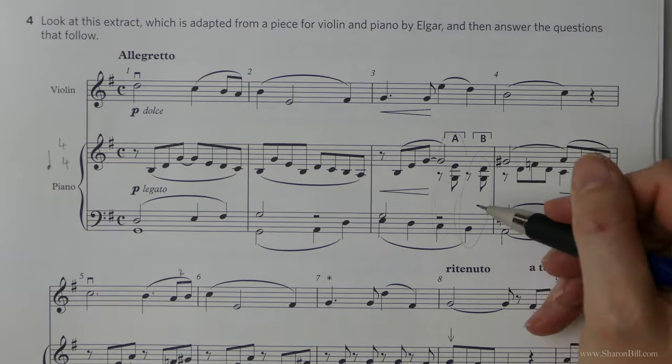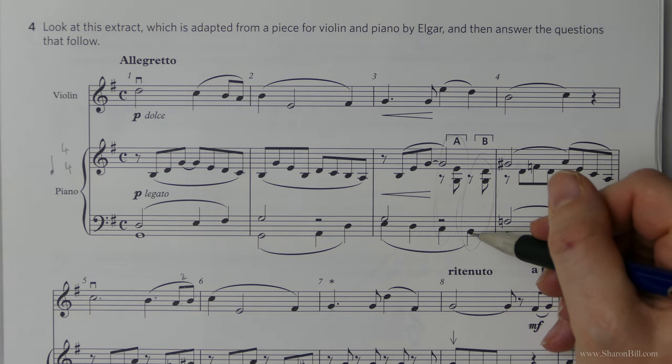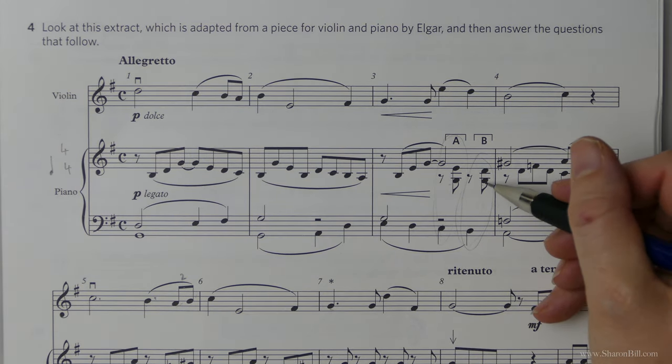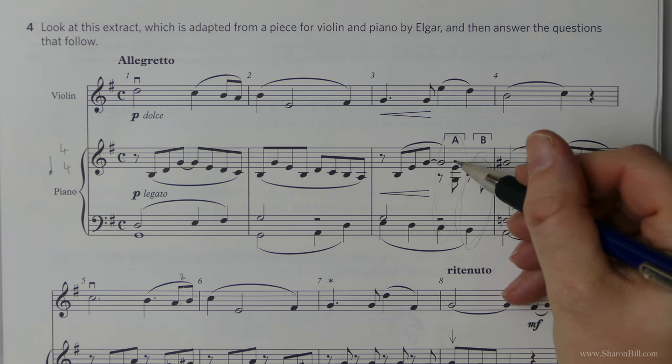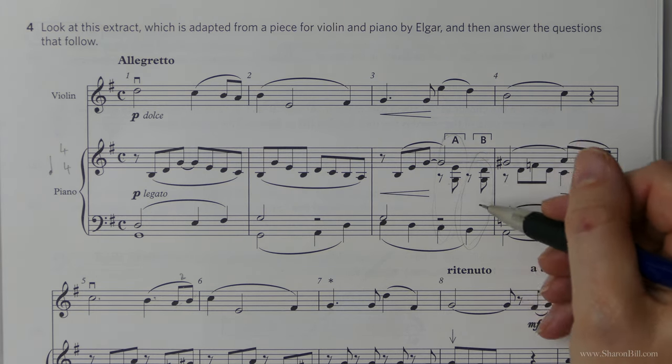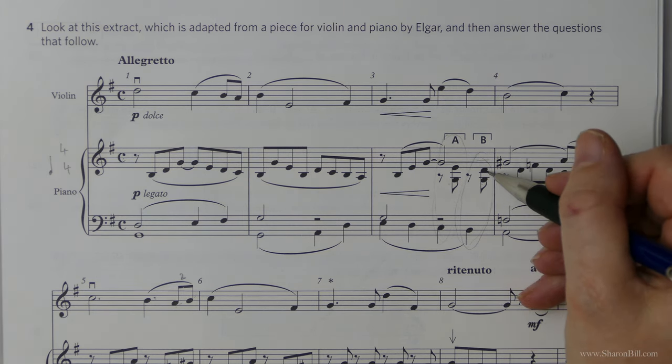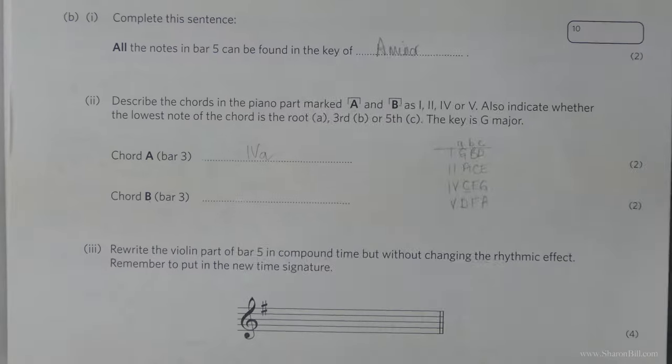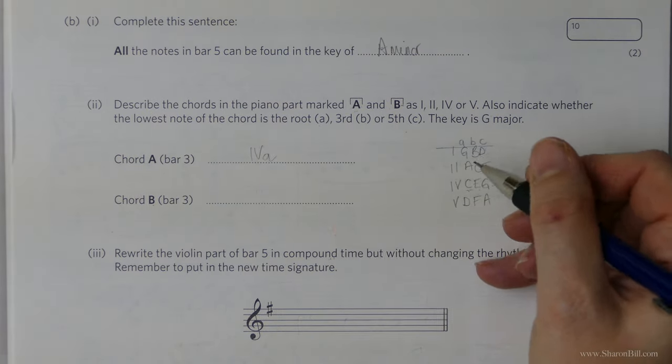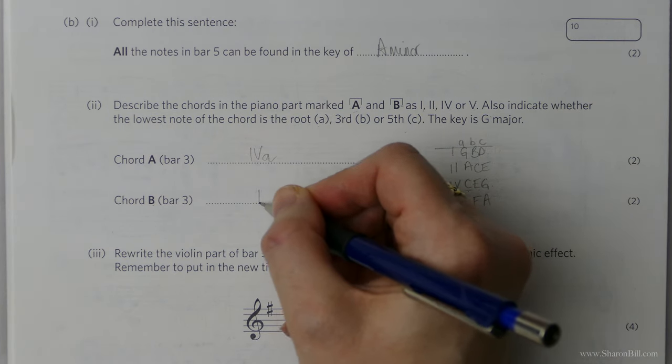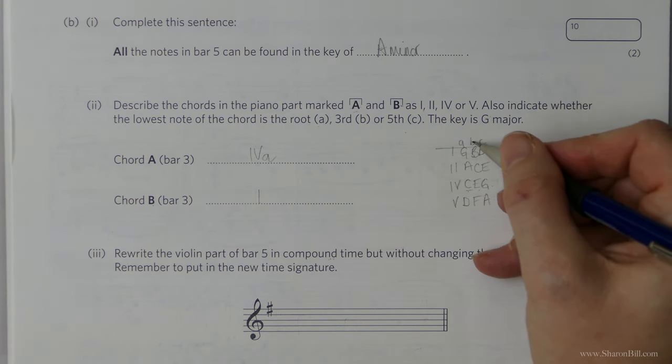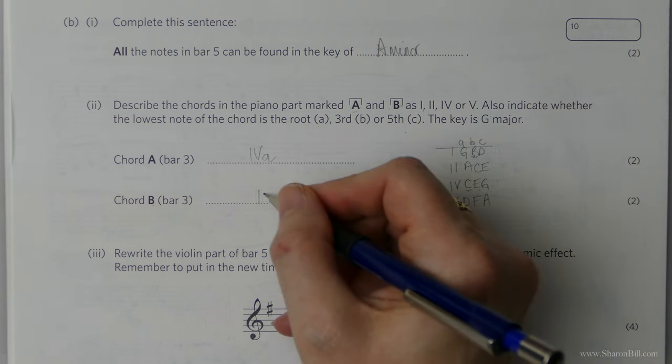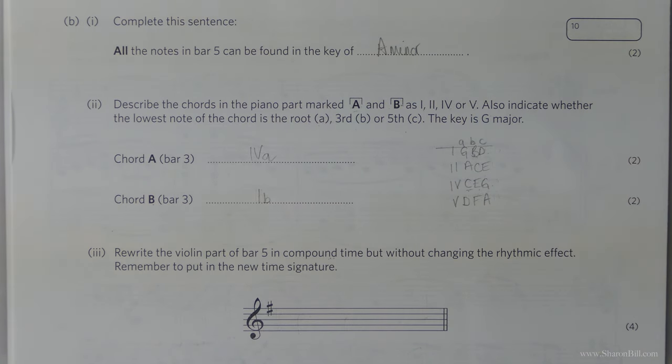So let's look at chord B. And here we see B. We have a B, a G, and a D. And then of course this G is still continuing. So another G as well. B, G, D, G. So they are the notes of chord I. But because the B is in the base, it's in first inversion. So we'd say B. There we go.